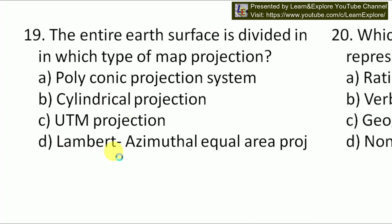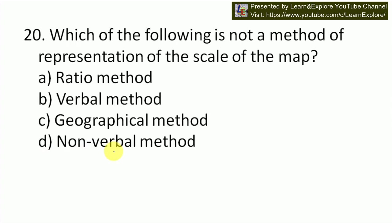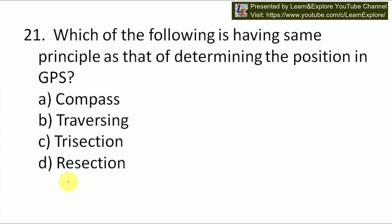Next question: which of the following is not a method of representation of the scale of the map? Options are ratio method, verbal method, geographical method, and non-variable method. In general, the scale of a map can be represented by three methods: ratio method, verbal method, and geographical method. Non-variable method is not a method for representing the scale of the map, so our answer will be D.